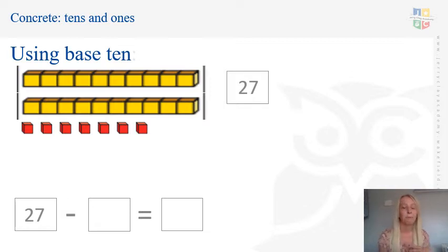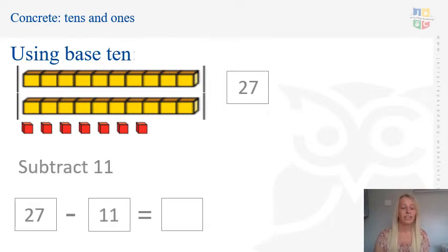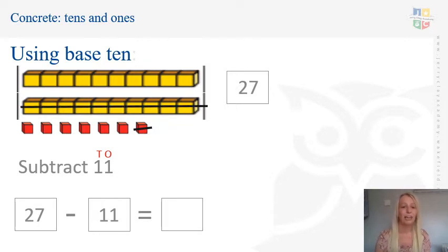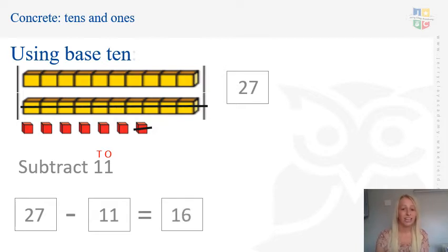When I'm taking away, we always start with the biggest number because the answer is going to get smaller. Today I'm going to subtract 11. I've partitioned it into 10s and 1s, and just like our column addition, I'm going to subtract my 1s first — taking one 1 away and crossing it out so I know it's gone. Then I subtract one 10 by crossing it out. I started with 27, subtracted 11, and counting what's left: 10, 11, 12, 13, 14, 15, 16. So 27 subtract 11 equals 16.